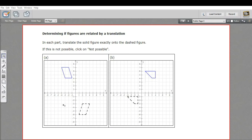In this problem, we're trying to determine whether a figure and an image of a figure, this dashed figure, could be related by a translation. That is, can you make one fit onto the other just by moving it around?